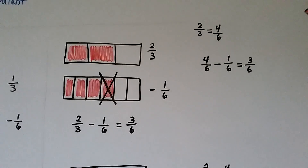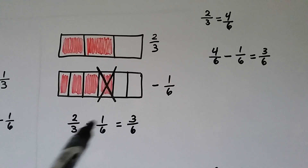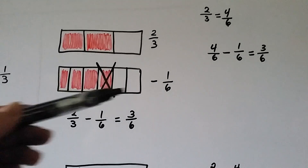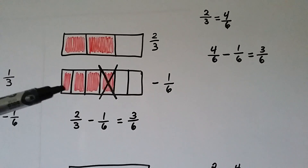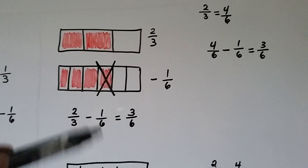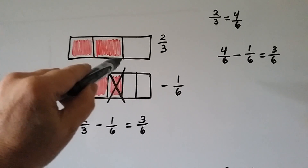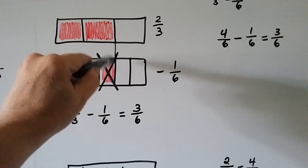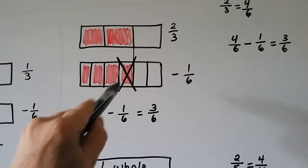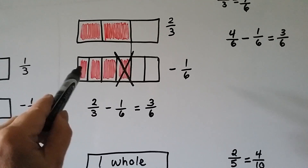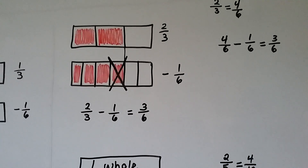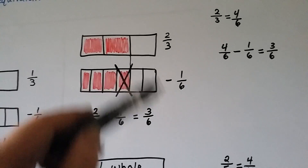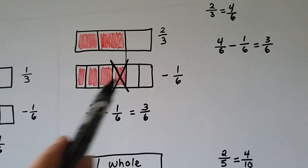Now we have two-thirds and we want to take one-sixth away. So we line up fraction bars that have sixths — it's split into six parts. We can see that these line up perfectly. If we take away one of these sixths, we're going to have three-sixths left over. The two-thirds is the same thing as four of these sixths.